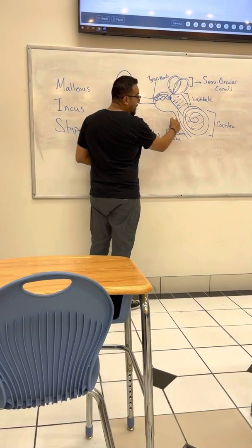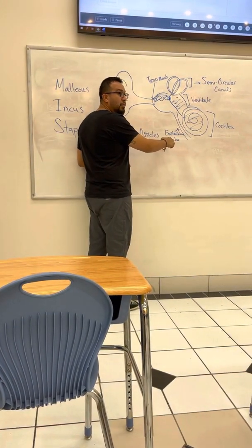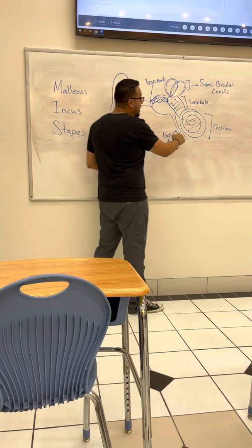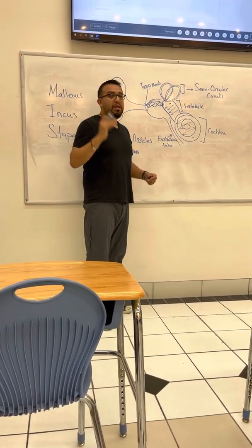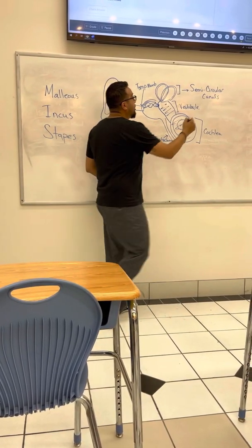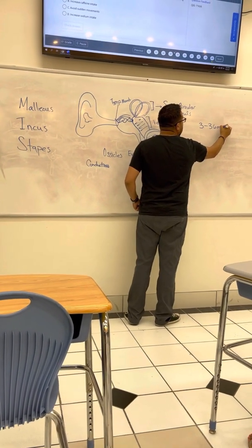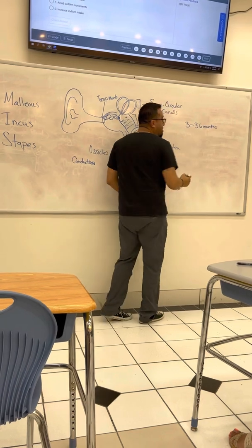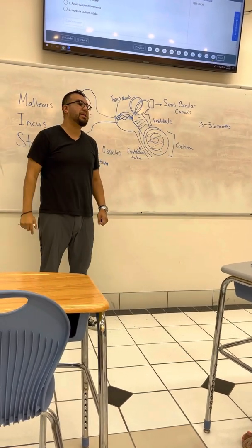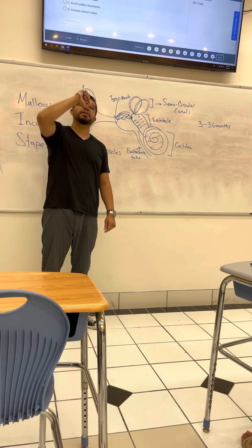You also have this thing right here called the eustachian tube which is connected to your pharynx, to your throat. And this is why kids from the age of three months to 36 months, if they're bottle fed, they have a high risk of developing otitis media, little ear infections.